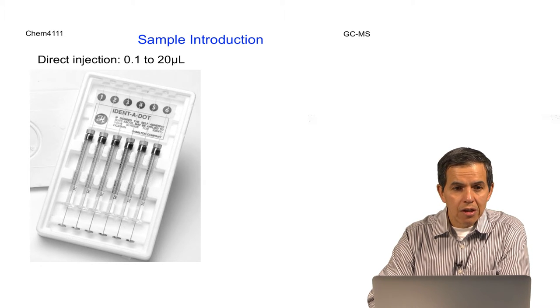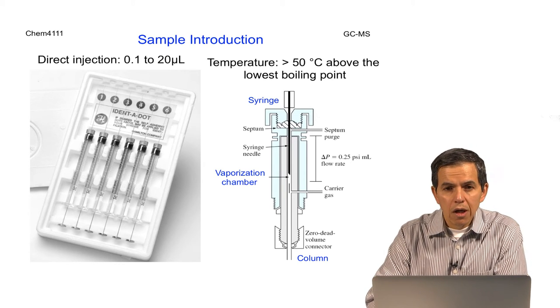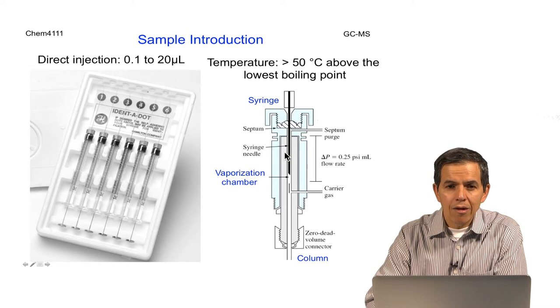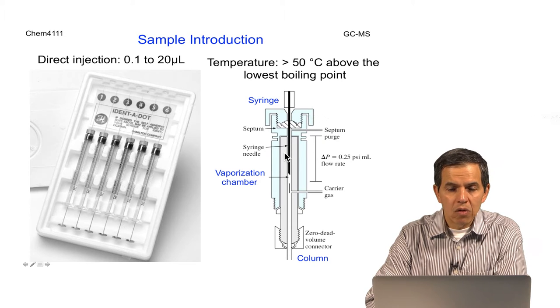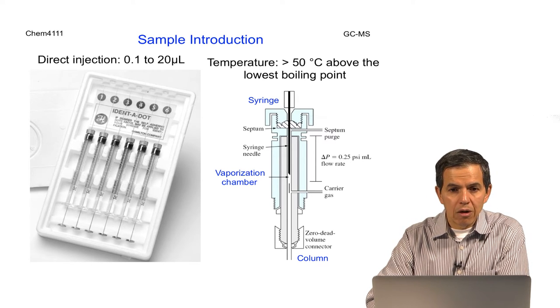In addition to the syringe and needle, it is important to have an injection port. This injection port is characterized by the ability to provide a high temperature, higher than the lowest boiling point of the compounds in the sample, so that they can become volatile and analyzed by this technology.